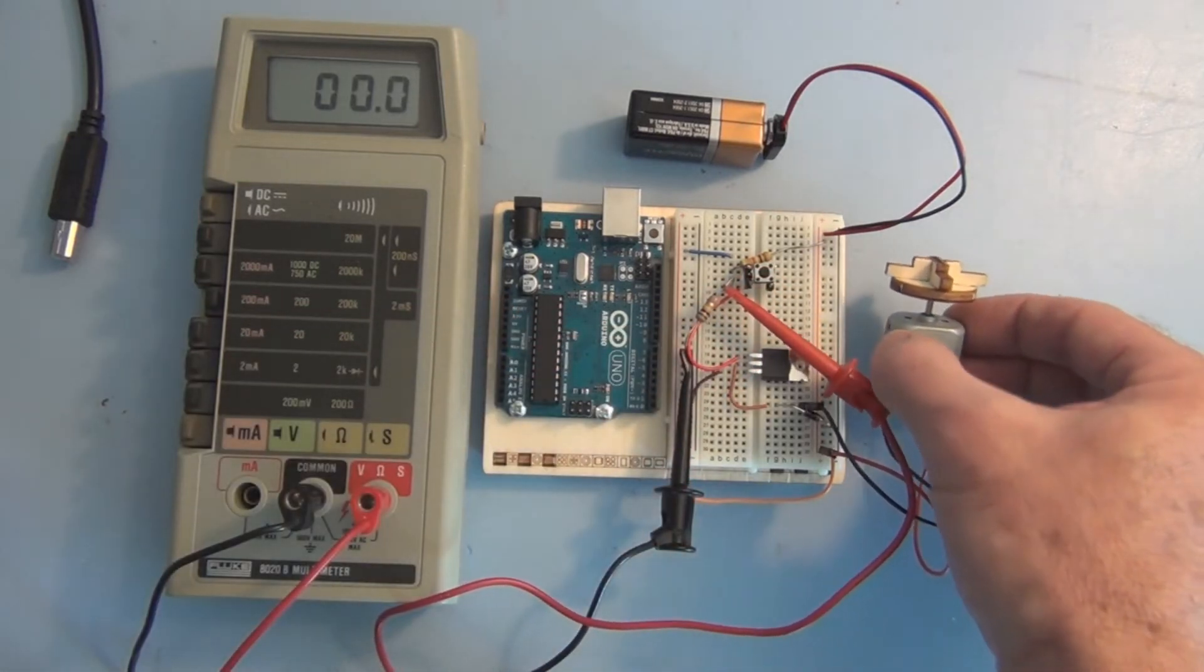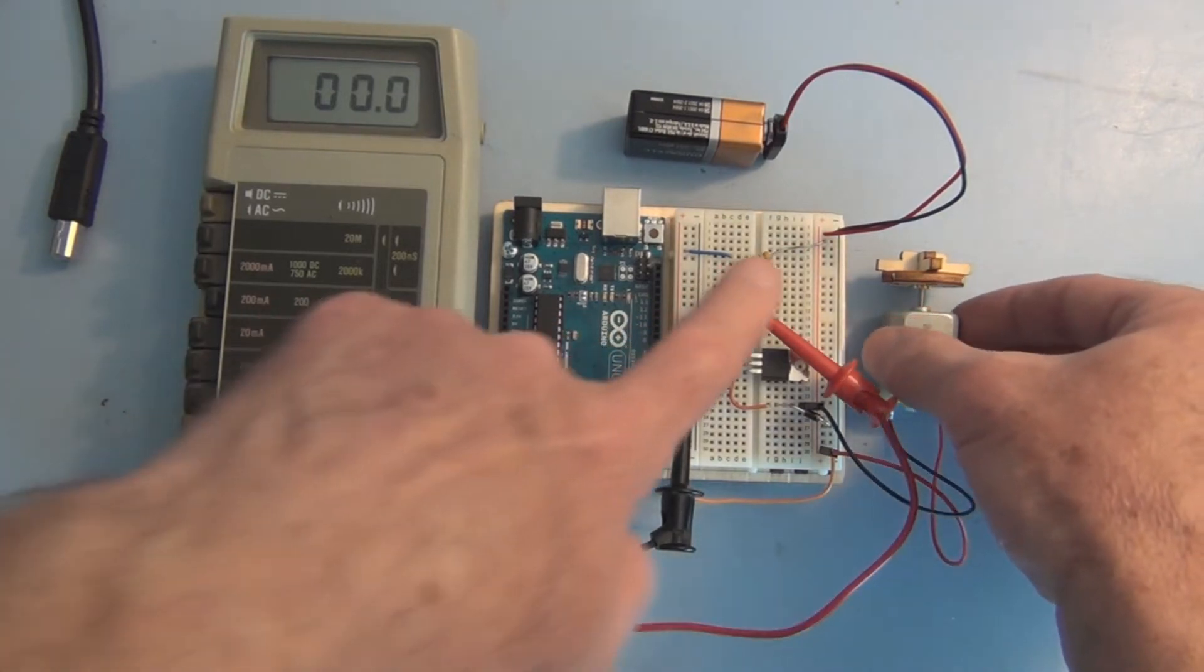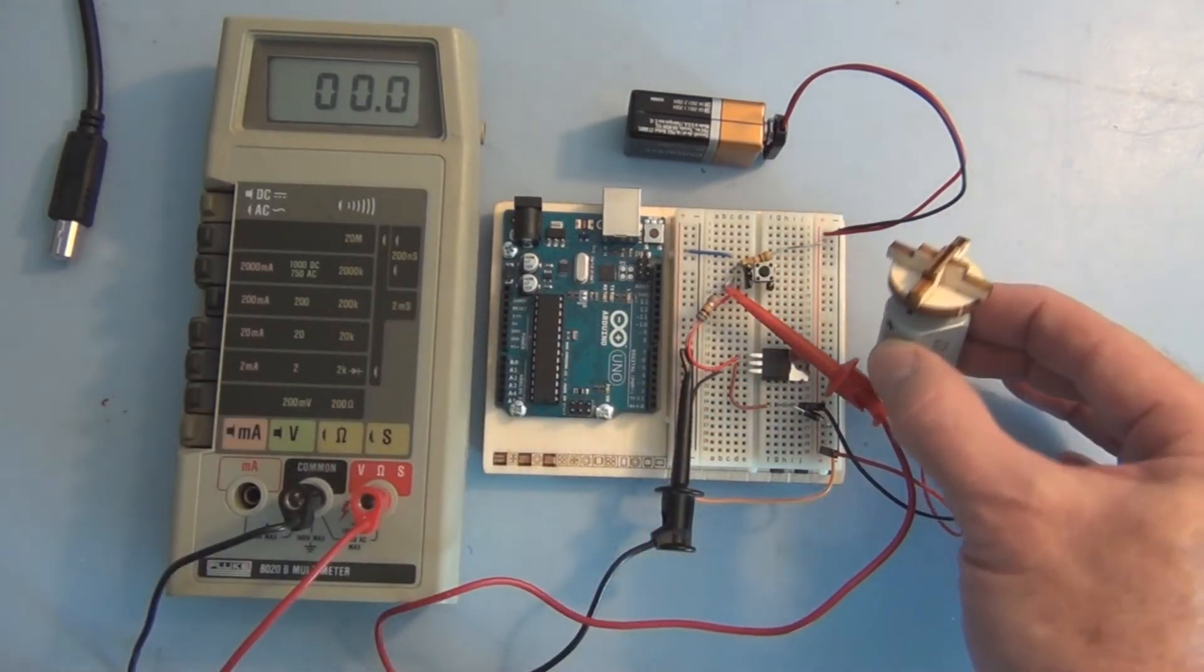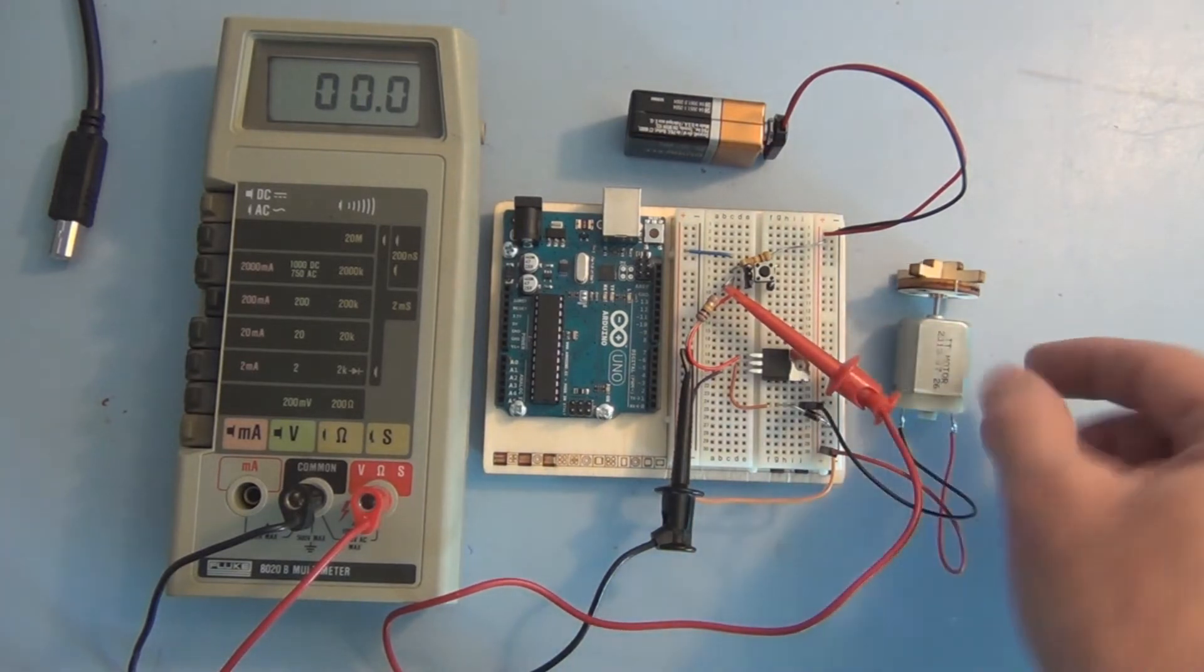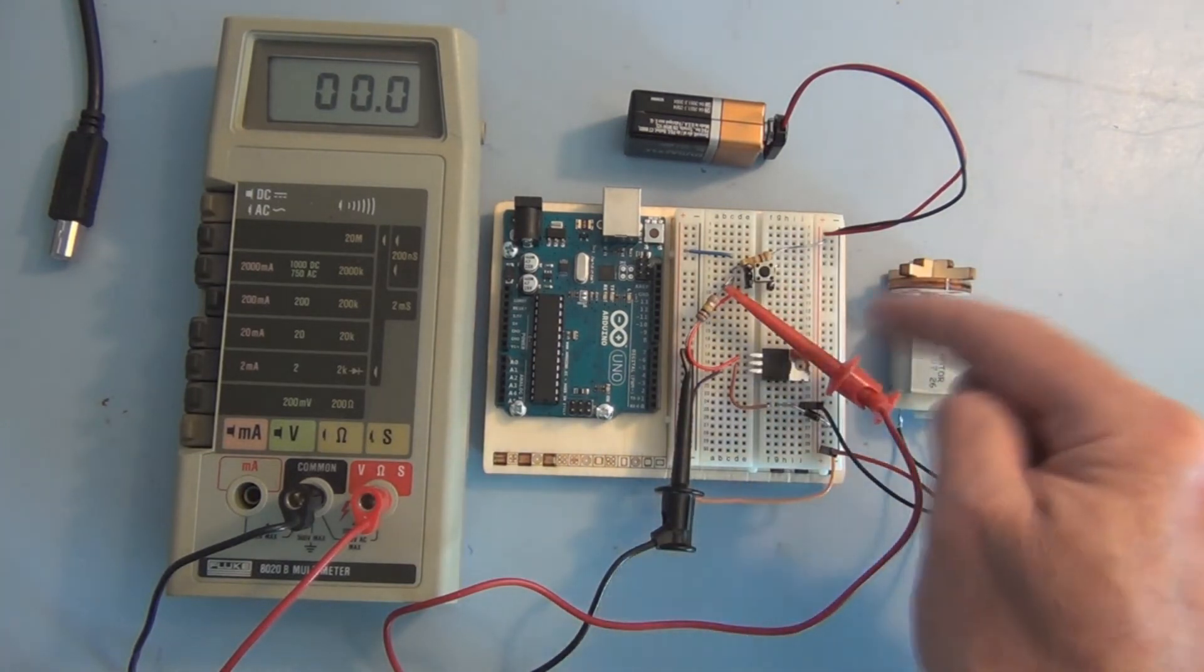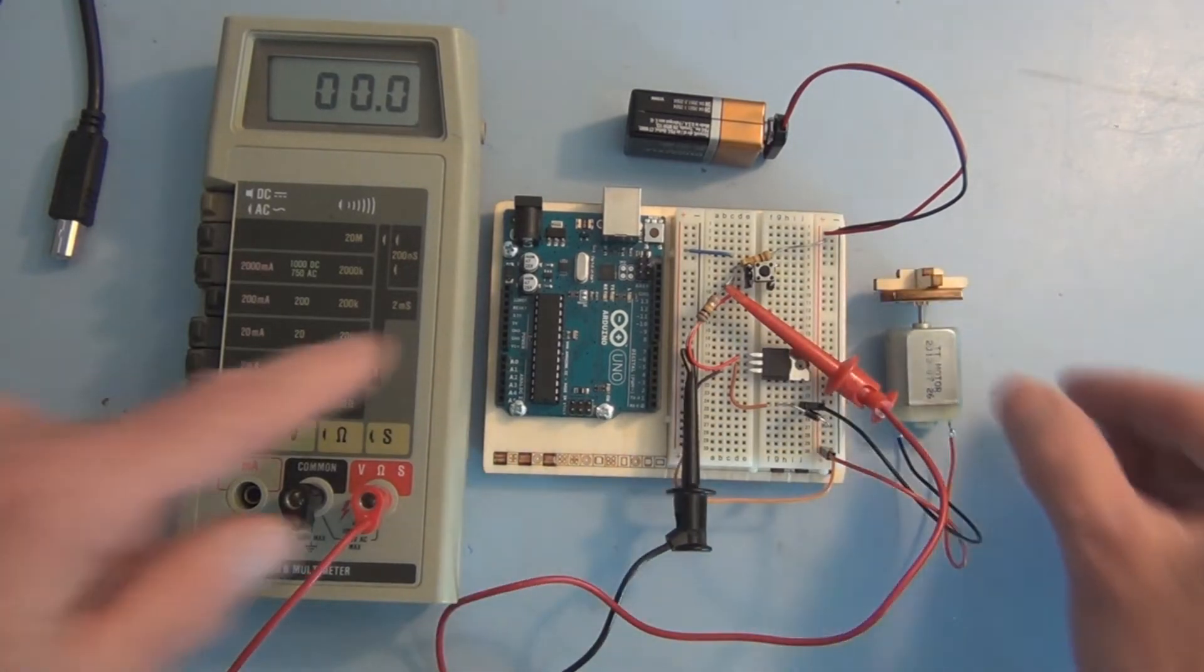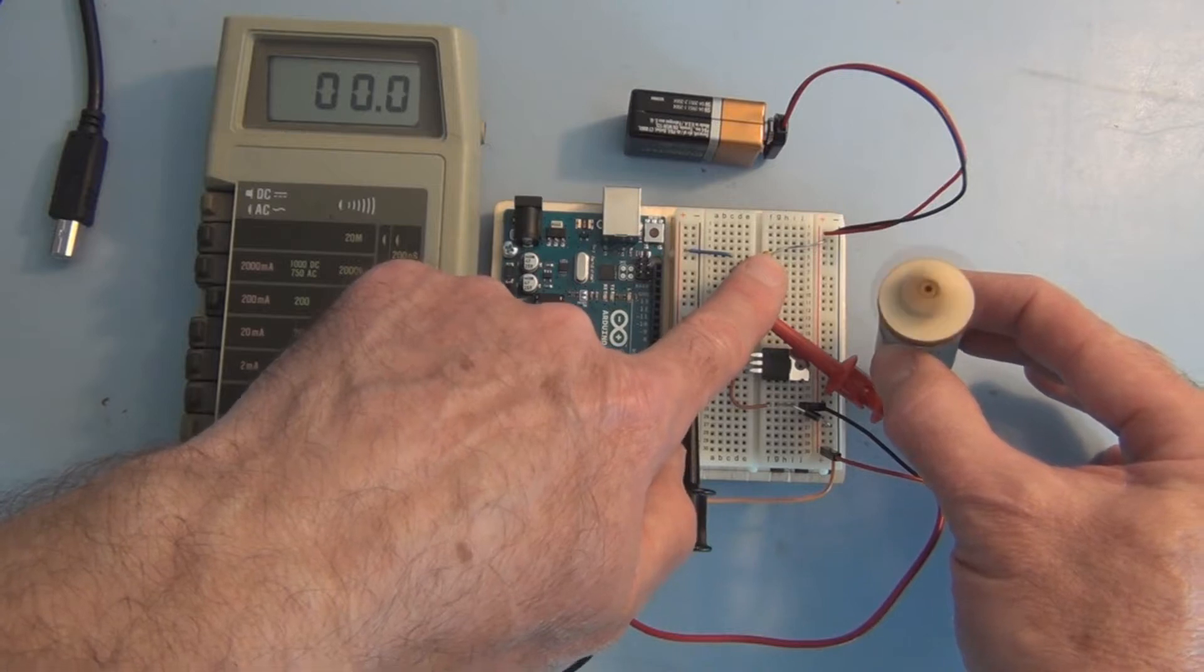So why use the Arduino? Well, what if we want to add some more features? You can see here it's a momentary switch, so when I remove my finger, the motor stops. Well, what if we want the motor to stay on when we press it once, and then have the ability to turn it off when we press the exact same switch again. And with this circuit, we can only go in one direction. What if we want to be able to change direction?